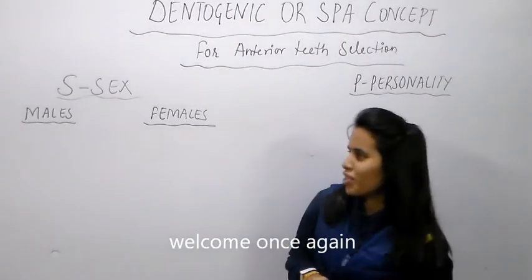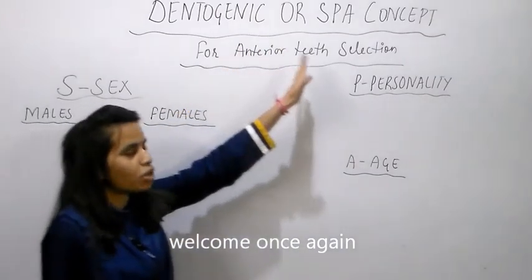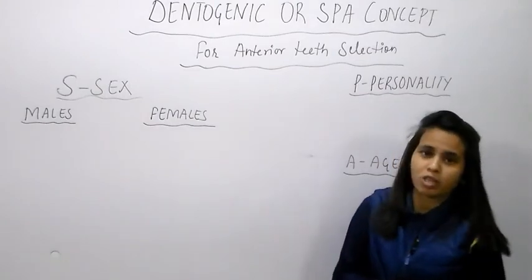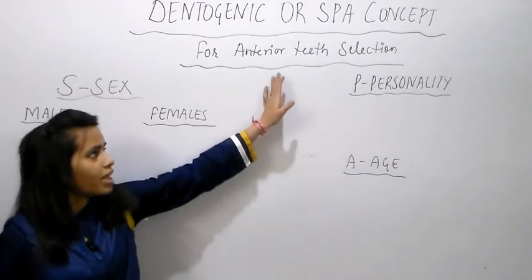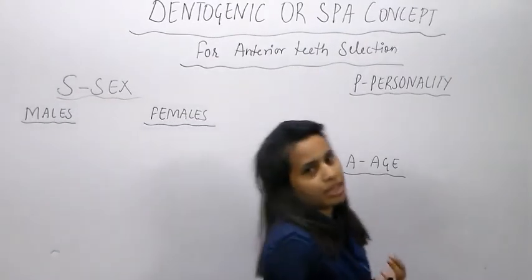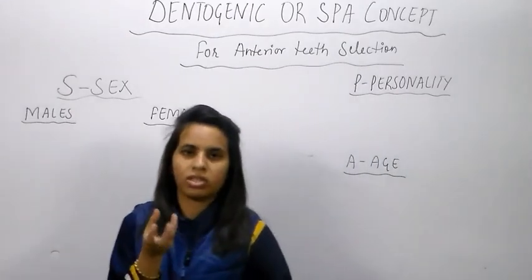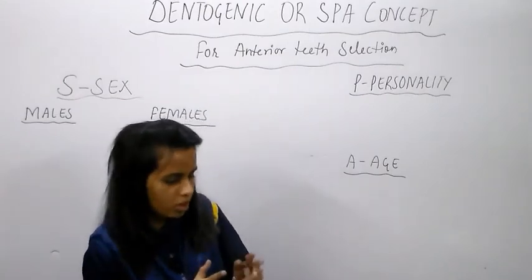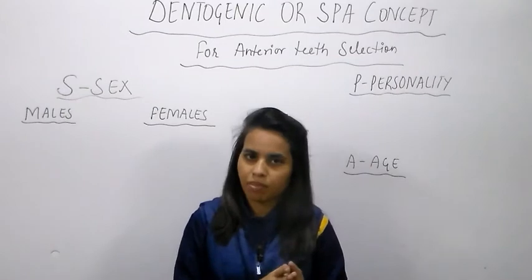Hello friends, in today's lecture I will teach the dentogenic concept, also known as the SPA factor or SPA concept. This dentogenic concept is mainly used for anterior teeth selection when we make complete dentures (CD). Anterior teeth selection is very important because anterior teeth are mainly for aesthetic purposes.